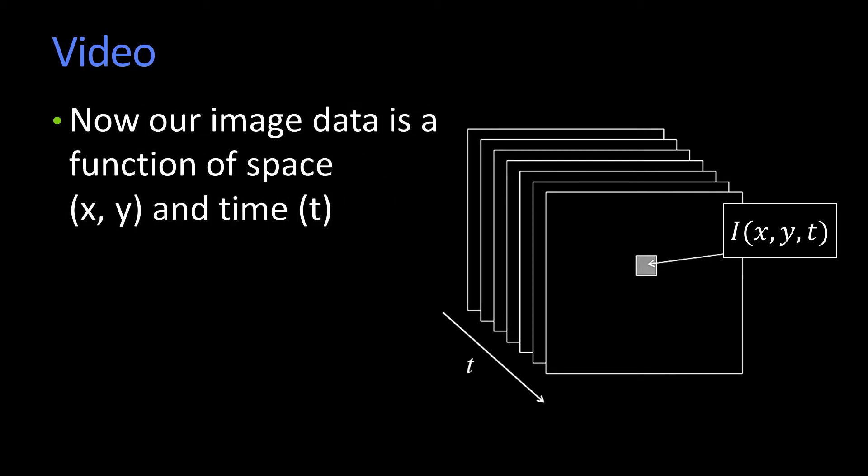Now, our image is no longer a function of just space, x and y. Our image is a function of space x, y, and time t. So our signal is I(x, y, t).